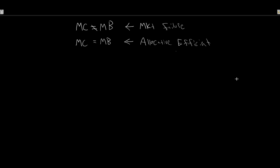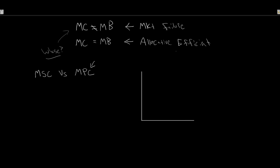We have this definition of market failure, and here's our first situation where we're going to put it to practice. When we talk about marginal cost and marginal benefit, we need to ask: whose? In this case, we need to distinguish between what we call the marginal social cost versus the marginal private cost. We're talking about our market — we have price and quantity — and we have our supply curve, which is also our marginal cost of the firm.